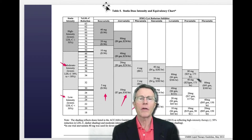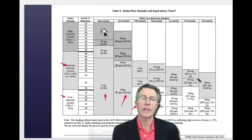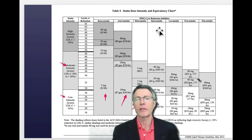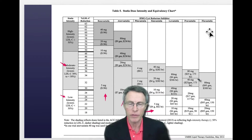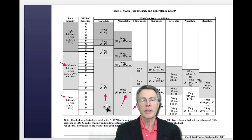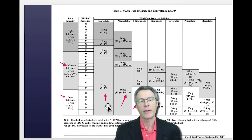Over here, this column is rosuvastatin and this one is atorvastatin or Lipitor. Rosuvastatin is Crestor. Pitavastatin is Livalo. You've also got simvastatin, lovastatin, pravastatin, and fluvastatin. Getting down into the low intensities, five milligrams of rosuvastatin is the standard.